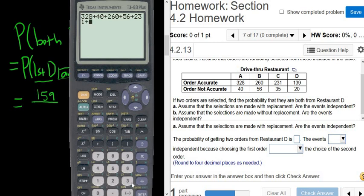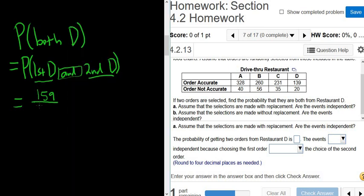Plus 231. That's the secret. If you know how to do it, it's always easy. 139. If you don't know how to do it, it's impossible. So here we go. 1109. So 1109. So that's the total number of ways to get an order. So again, the probability of picking an order from restaurant D is the number of ways to pick an order from restaurant D. So 159 divided by the number of ways to pick an order.